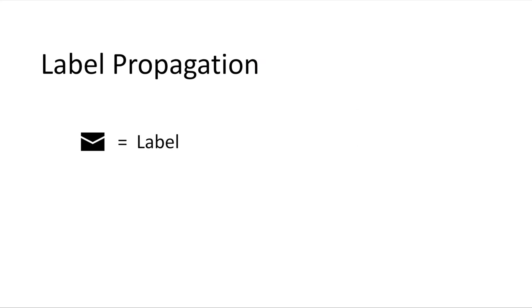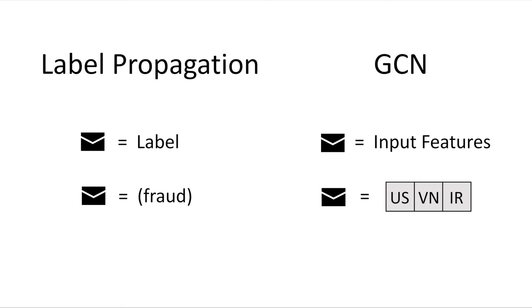GCNs can be understood as a simple message passing algorithm. But whereas label propagation just passes messages about the label value, GCNs do this for an entire vector of input data. So an account doesn't just tell its neighbors I'm known fraud or not, but my credit card is from the US and my IP address is from Vietnam and my billing address is in Ireland, and whatever else you know about the account. If label propagation is label smoothing in a neighborhood, think of GCN as feature smoothing.